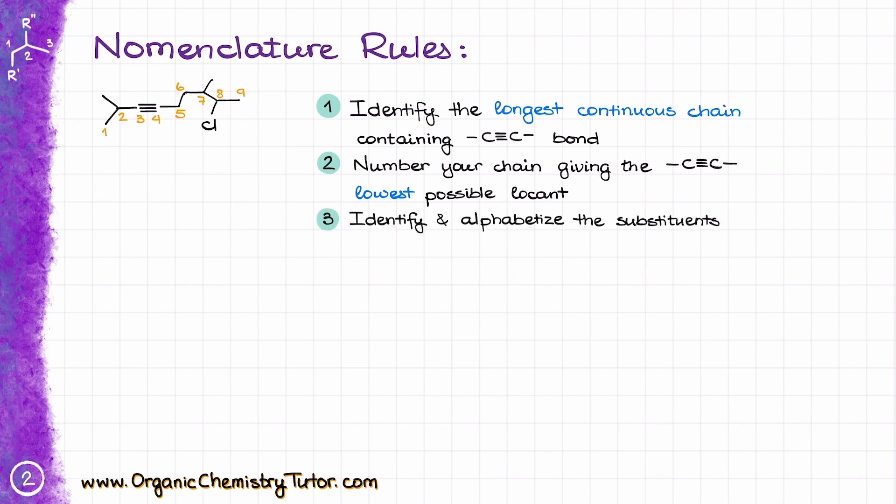Next, after we have our numbering, we are going to identify and alphabetize our substituents. Here, I have two methyl groups at the positions 2 and 7, so I'm going to say that this is going to be a 2,7-dimethyl, and I want to remind you here that the numerical prefix di is not counted for the alphabetical order. We also have a chlorine atom in this molecule as well, in the eighth position, so we are going to call it 8-chloro. And remember, in the final name, we are going to alphabetize our substituents regardless of their position in the molecule.